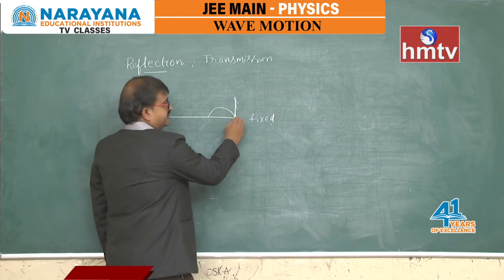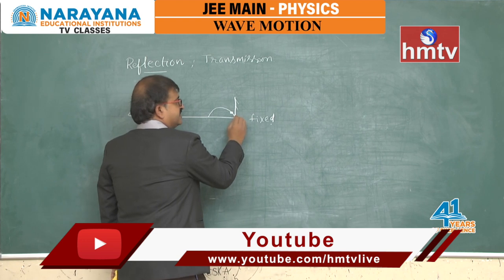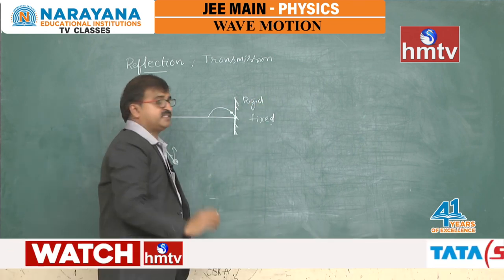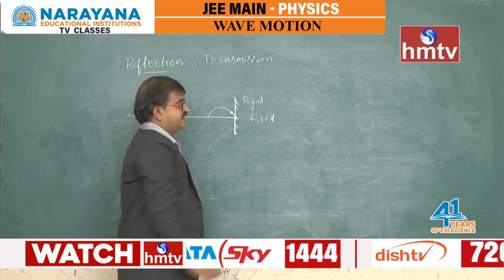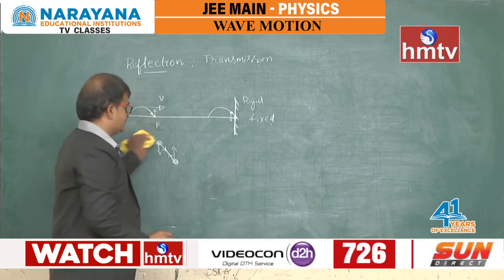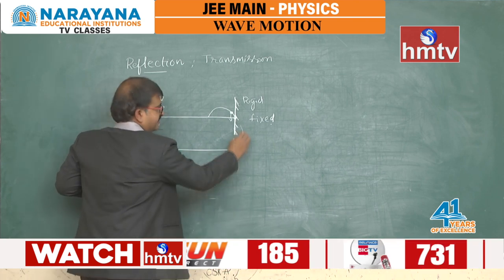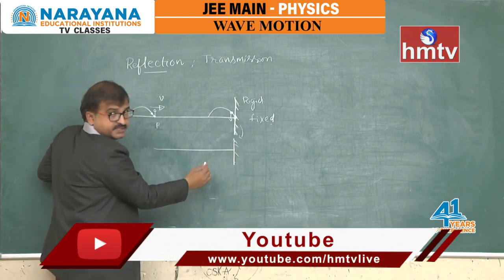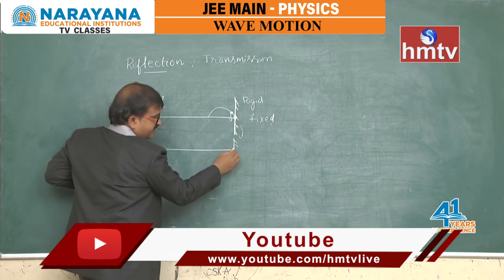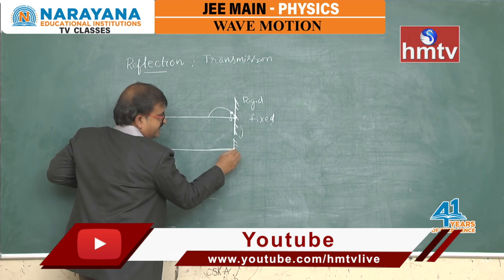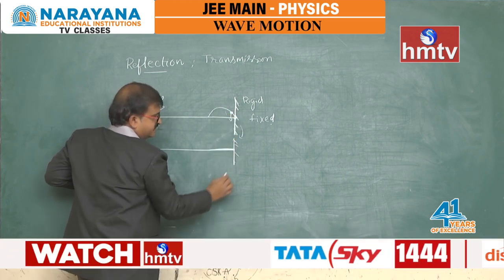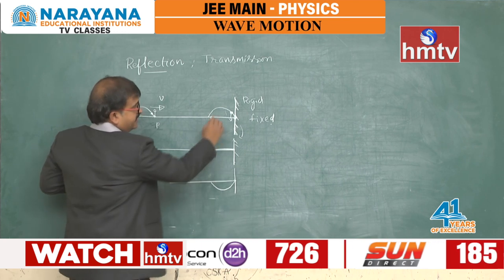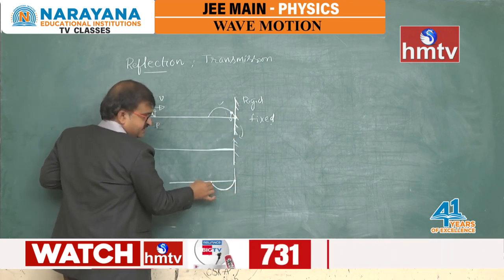The same thing happens, but since this point is attached to the rigid support, there will be no displacement here. Instead, this one is pulled down. As a result, based on Newton's third law, the same force acts with equal and opposite effect, and this point moves down. It becomes horizontal at that instant, comes back to original position, and then turns — so the crest incident on it will be turned into a trough.